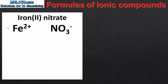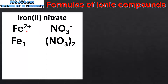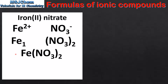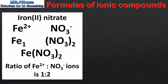In the next examples the ratio of ions is not 1 to 1. Starting with iron(II) nitrate, composed of Fe²⁺ ions and nitrate ions. Using the crossover technique we take the 2 from the iron and write it as a subscript for the nitrate ion, and we take the 1 from the nitrate ion and write it as a subscript for the iron. We then write it as a formula which is Fe(NO₃)₂. Note that when writing the formula we need to use brackets around the NO₃ part. This tells us that in a formula unit we have a ratio of Fe²⁺ to NO₃⁻ ions of 1 to 2.